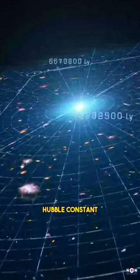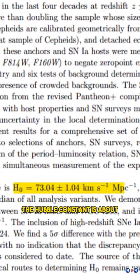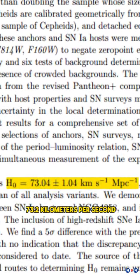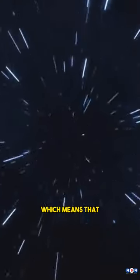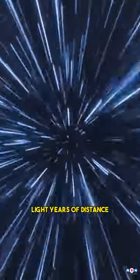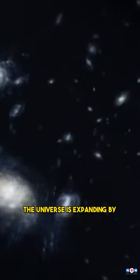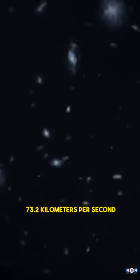They found that the Hubble constant is about 73.2 kilometers per second per megaparsec, which means that for every 3.26 million light-years of distance, the universe is expanding by 73.2 kilometers per second.